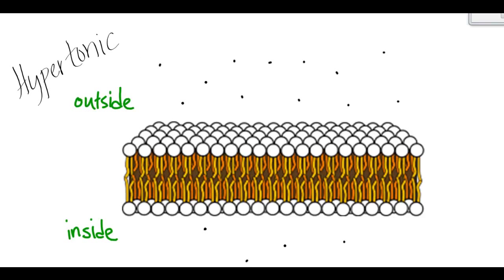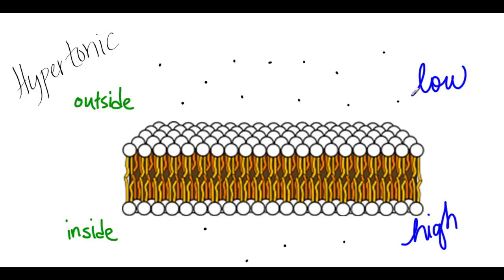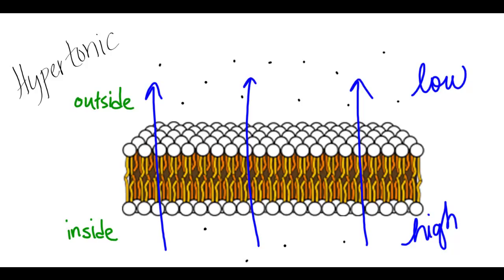Tonicity and osmosis are very important when it comes to cells. In a hypertonic solution, the solute concentration outside of the cell is greater than the solute concentration inside of the cell. That means the solvent or water concentration is low outside of the cell and high inside of the cell. So water is going to flow from high water concentration to low water concentration — in a hypertonic solution, water flows out of the cell.